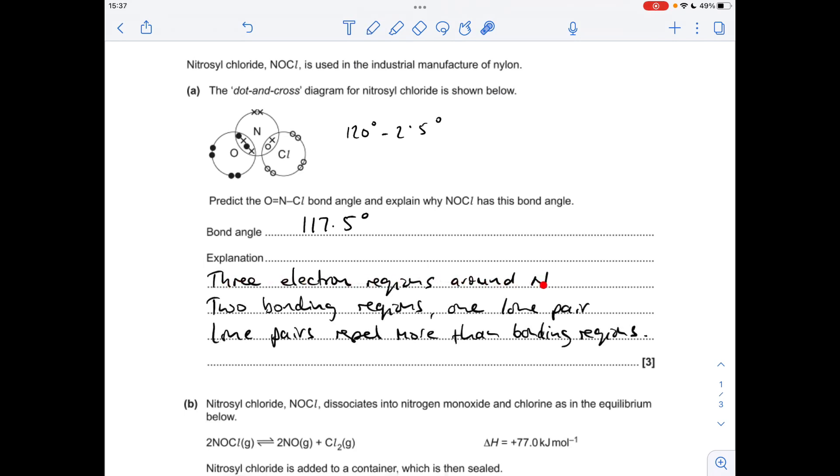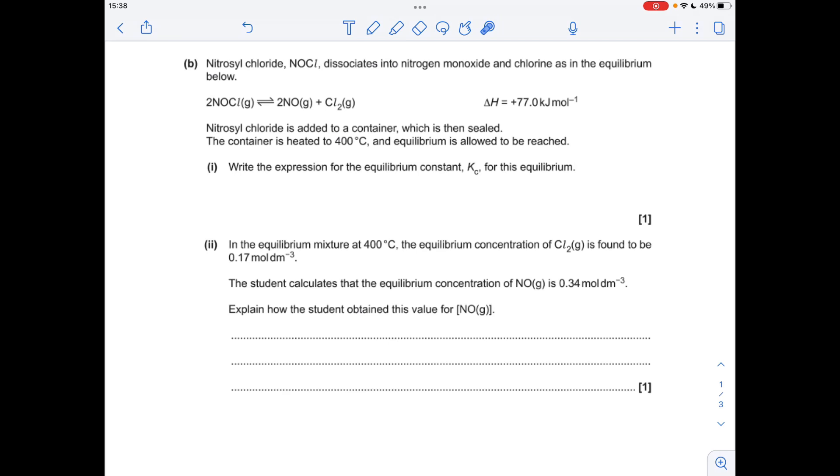Three electron regions around the nitrogen, two bonding regions, one lone pair. Lone pairs repel more than bonding regions. Moving on to part B,